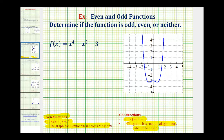When determining whether a graph is odd, even, or neither, I always like to look at the graph first. Here's the graph of f of x equals x to the fourth minus x squared minus three. Right away, we should be able to recognize that if we were to fold this graph across the y-axis, the two halves would match up perfectly, and therefore this has symmetry across the y-axis.